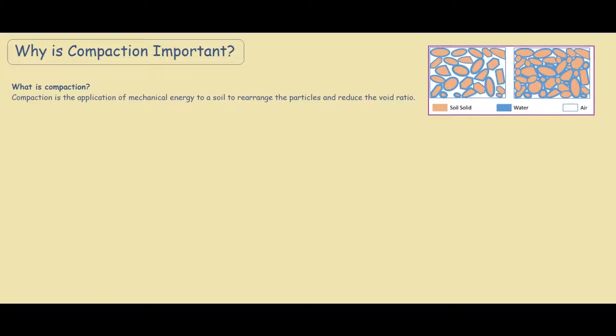Compaction is the application of mechanical energy to a soil to rearrange the particles and reduce the void ratio. This mechanical energy is usually applied through compacting machines and the rearrangement of particles affects the properties of the soil.